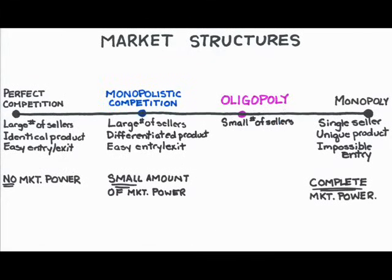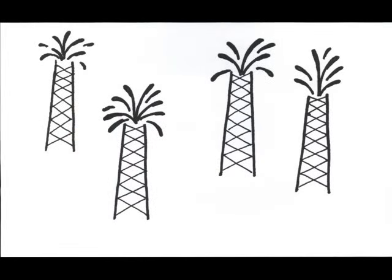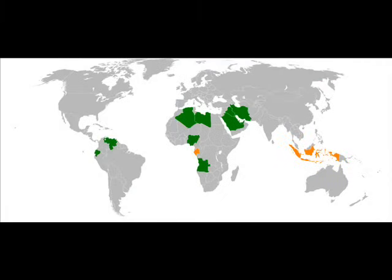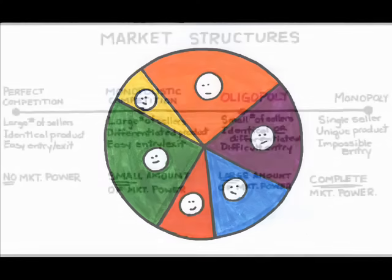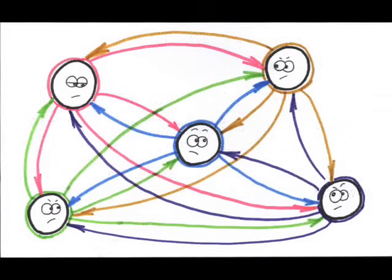An oligopoly? The prefix 'olig' means few, so there are a few large producers making up the market, each with a large amount of control or market power. There are some barriers to entry, so it's hard, but not impossible, to get in. The product in an oligopolistic market can be identical — like the members of OPEC who produce oil — or differentiated, like car manufacturers. The number of producers could be just a handful, like cars, or a couple dozen, like oil producers. The key is that each producer has a large enough chunk of the market that any individual producer can affect what happens in it. Because everyone's actions matter, the producers become mutually interdependent — whatever one does affects everyone else. This mutual interdependence makes the oligopoly the most complicated type of market structure to operate in.